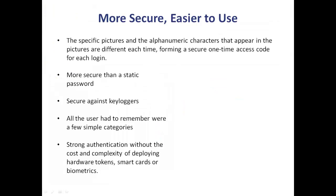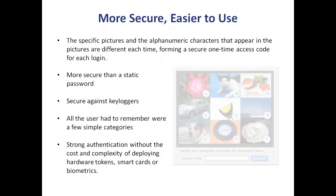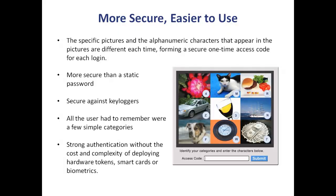It's important to note that the user's categories will always remain the same, but the specific pictures, their location on the grid, and the alphanumeric characters are different each time. In this way, Confident Image Shield creates a unique one-time access code for each login, yet the user only had to remember a few simple categories — money, dogs, and cars.